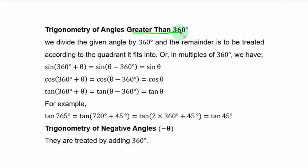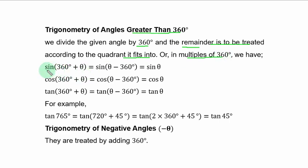For trigonometry of angles greater than 360 degrees, we divide the given angle by 360 degrees and the remainder is to be treated according to the quadrant it fits into. If the angle is a multiple of 360 degrees, we divide the given angle by 360 degrees and we therefore have that sin(n×360° + θ) is equal to sin theta, and similarly for the other ratios.